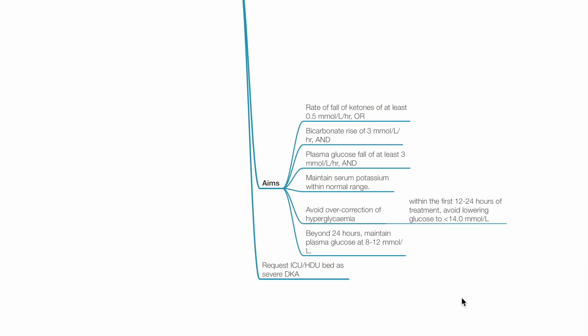The aim is for rate of fall of ketones of at least 0.5 mmol per liter per hour or bicarbonate rise of 3 mmol per liter per hour and plasma glucose fall of at least 3 mmol per liter per hour and maintain serum potassium within normal range. Avoid overcorrection of hyperglycemia within the first 12 to 24 hours of treatment. Avoid glucose less than 14 mmol per liter. Beyond 24 hours, maintain plasma glucose between 8 to 12 mmol per liter. Request ICU or HDU bed as the patient has severe DKA.